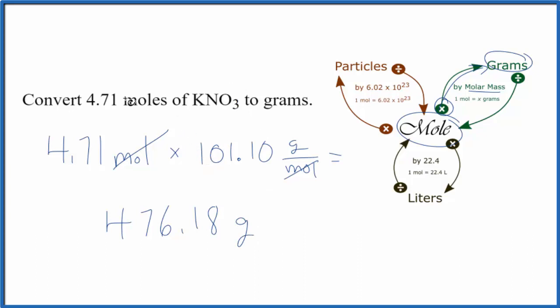So just to recap how we did this. We had our moles. We found the molar mass of KNO3. We multiplied moles times the molar mass. Moles canceled out, and we had grams of KNO3.